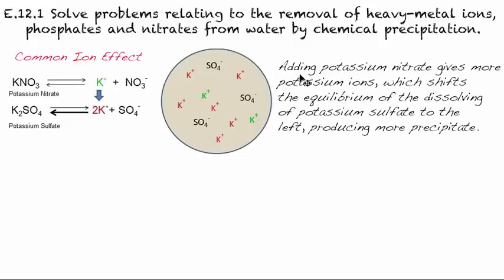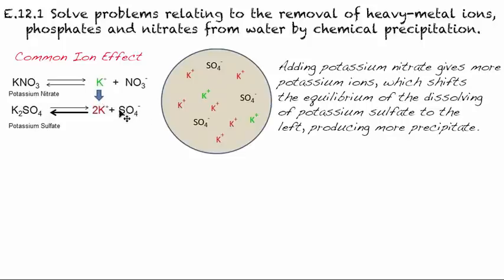In words: adding potassium nitrate gives more potassium ions, which shifts the equilibrium of the dissolving of potassium sulfate to the left, producing more precipitate. To apply this, identify which equation has the precipitate, look at what ions are present, then decide what to add to shift the equilibrium. Usually, we want to remove sulfates — so rather than adding more sulfate, we add the counterion (in this case potassium), because that will drive the sulfate into precipitate form.